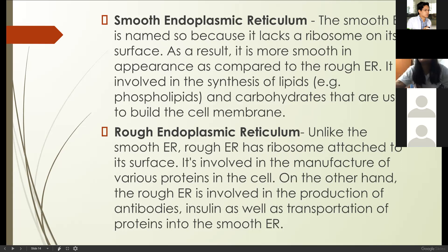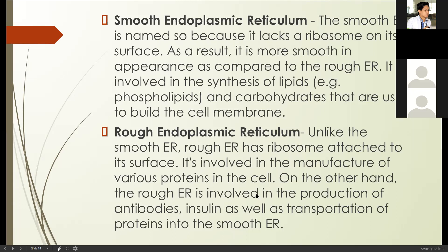The second type is the rough endoplasmic reticulum. Unlike the smooth ER, the rough ER has a lot of attached ribosomes on its surface, which makes it rough in appearance. The rough ER is involved in the manufacture of various proteins in the cell. It is also involved in the production of antibodies and insulin, as well as the transportation of proteins into the smooth ER. The smooth ER and rough ER are actually interconnected.